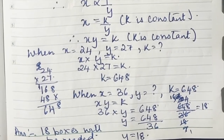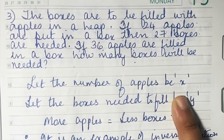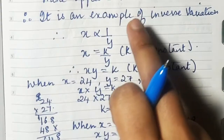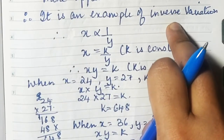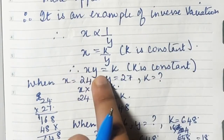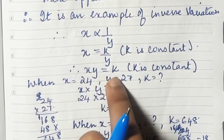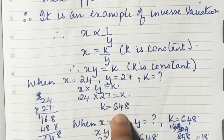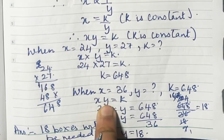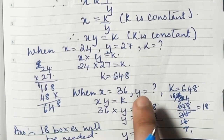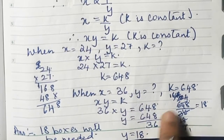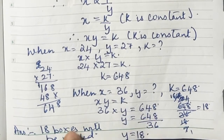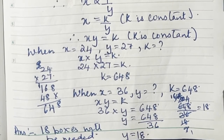Let me explain the sum again. Number of apples is x, number of boxes is y. We found it's an inverse variation, so x into y equals k. We found the value of k when we knew x and y. Then with x equal to 36, k remaining constant, we found y equals 18. So the answer is 18 boxes.